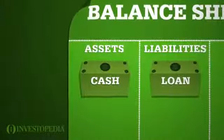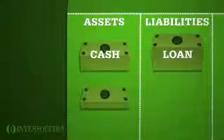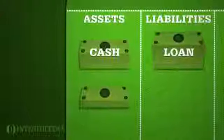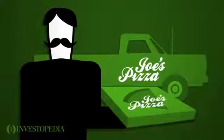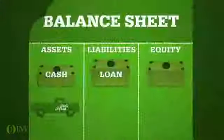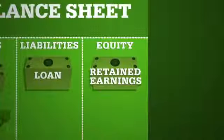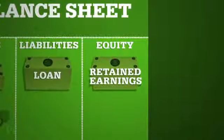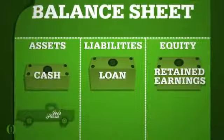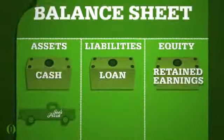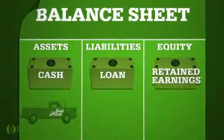His cash assets decrease, but that's balanced by an increase in his other assets, a new truck. As Joe delivers pizza, the profits are recorded in the balance sheet as retained earnings in the equity section of the balance sheet. The cash from his profit is recorded in the assets section, balancing out.